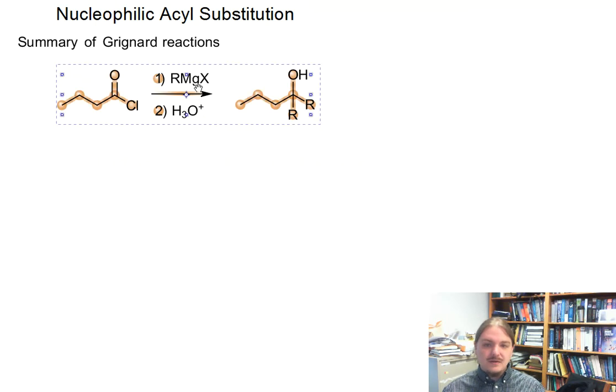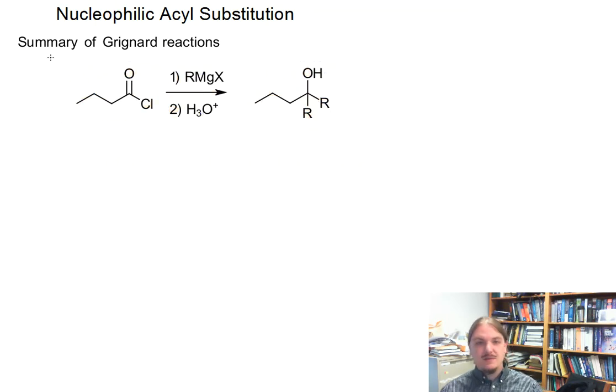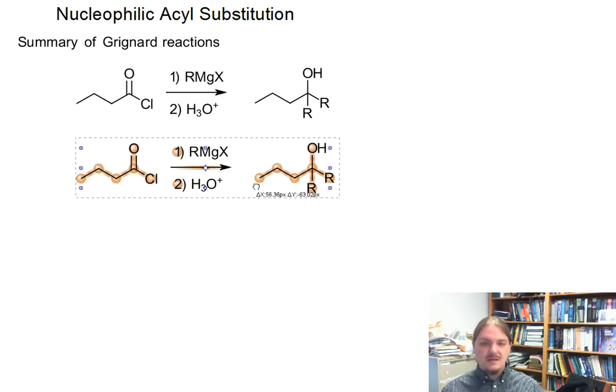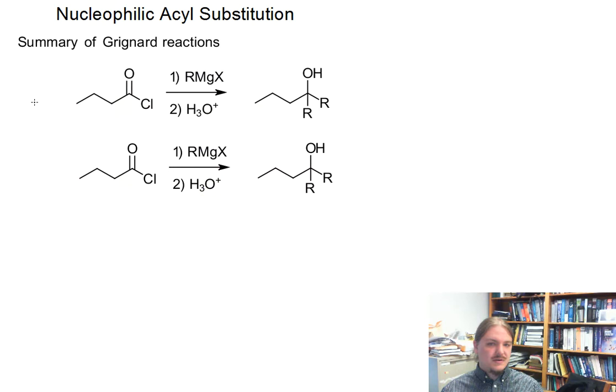So acid chlorides react with Grignard reagents once to form a ketone and then a second time to form the tertiary alcohol.